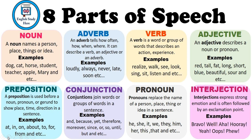Here is a brief explanation of the parts of speech — you can see it on this slide. A noun names a person, place, thing, or idea. Noun jo hai, hume wo logon ke naam, cheezon ke naam, aur ideas ke naam batate hain. For example: dog, cat, horse, students, teacher.